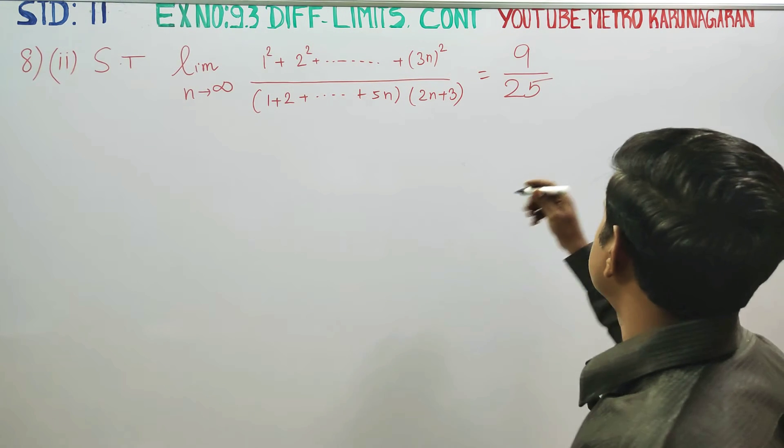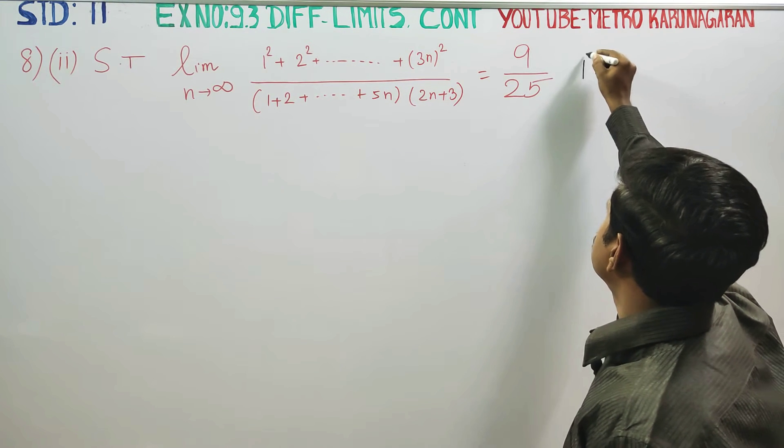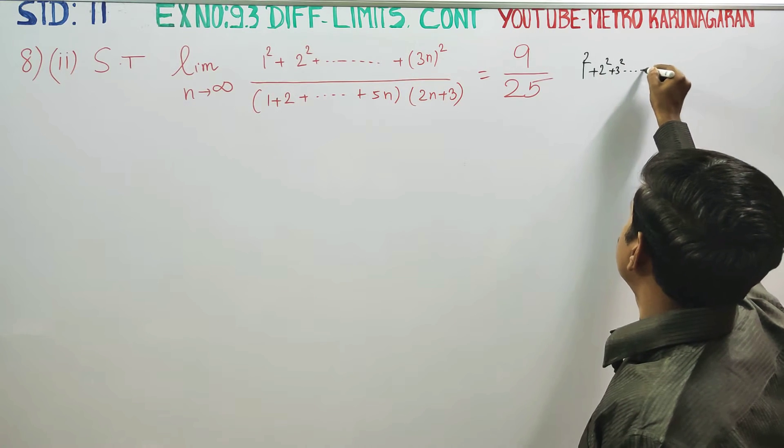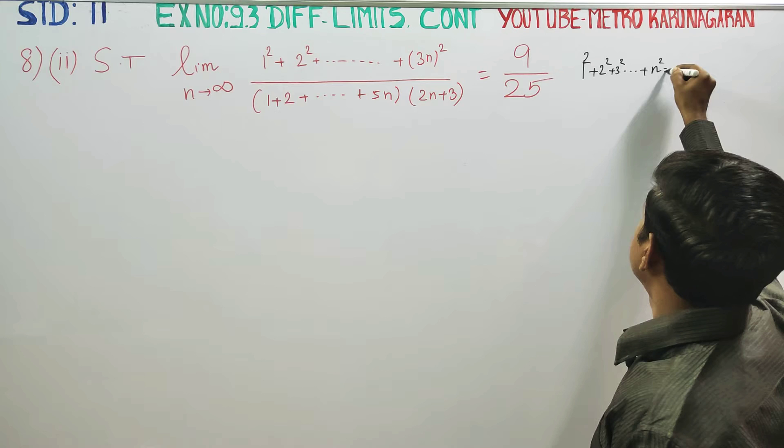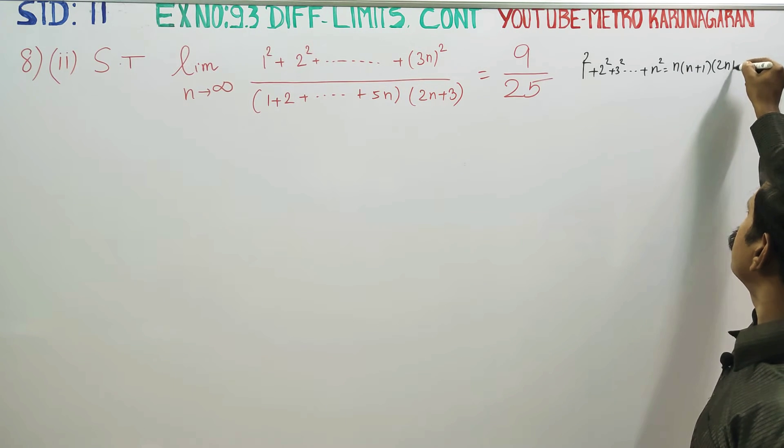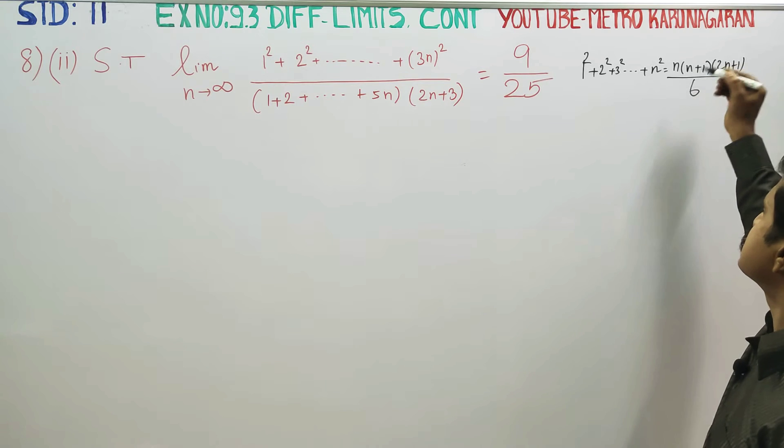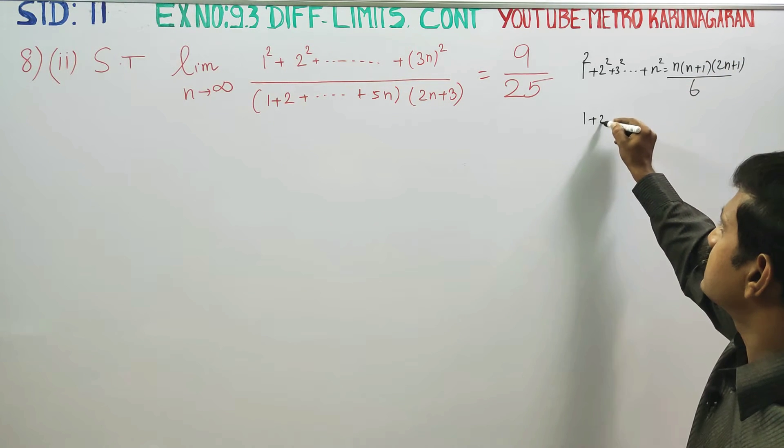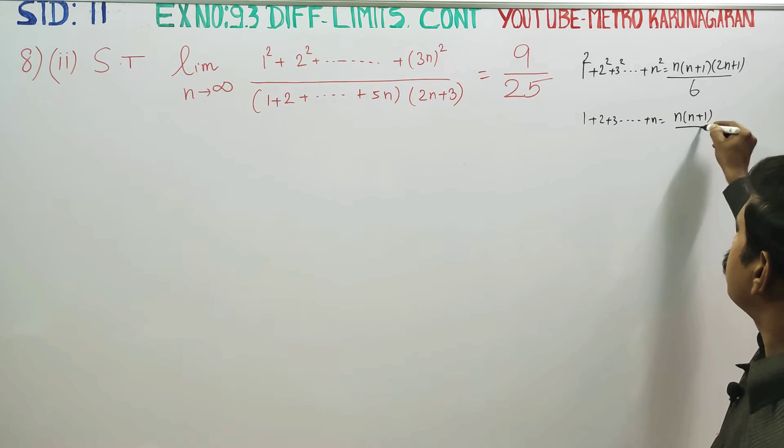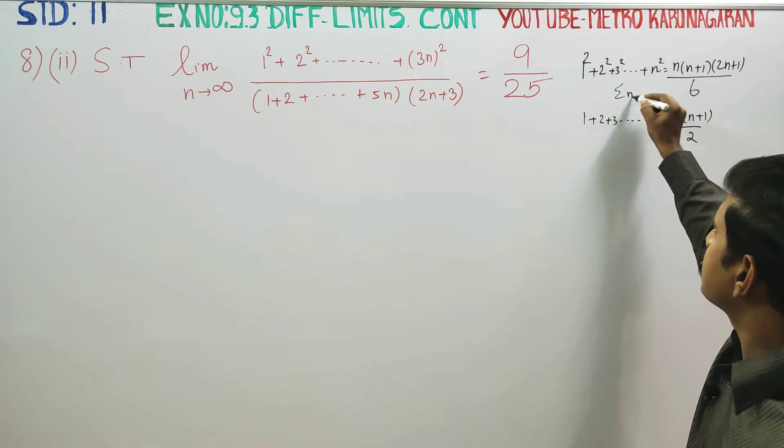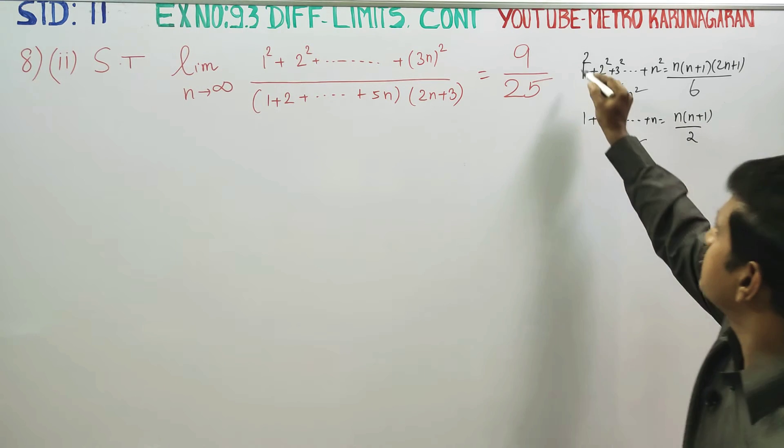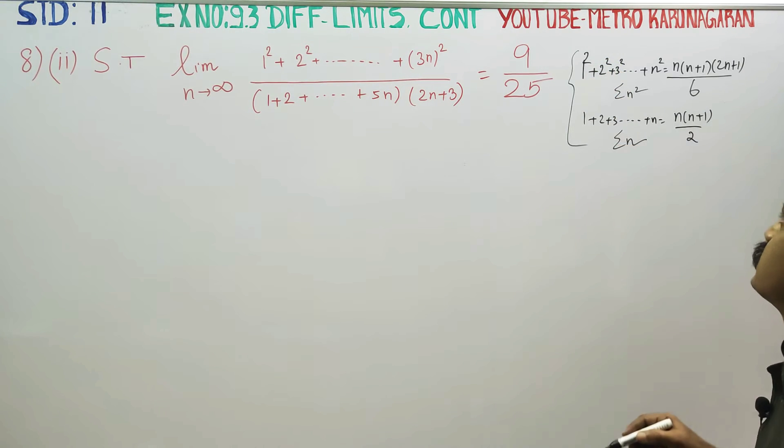Before entering into this sum, you have to know the formulas. 1² + 2² + 3² + ... + n² equals n(n+1)(2n+1)/6. And 1 + 2 + 3 + ... + n equals n(n+1)/2. This is called the sigma n² formula. This is called the sigma n formula. From 10th standard, you have to recall these formulas.